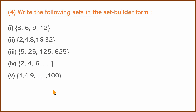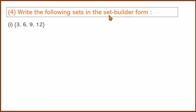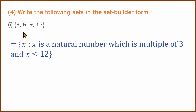This is the reverse question — converting roster form to set-builder form. First one: 3, 6, 9, 12... These are multiples of 3. It is a natural number, not a negative number — it is a positive number.